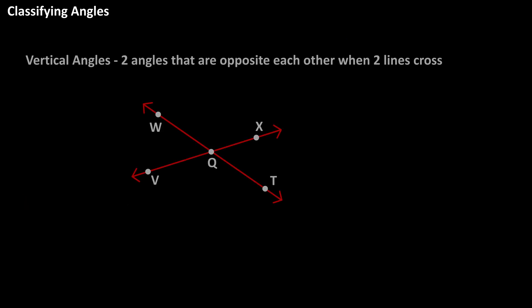Vertical angles are angles that are opposite each other when two lines cross, and vertical angles have the same measurement. In this diagram, angle VQT and angle WQX are vertical angles, and angle WQV and angle XQT are also vertical angles.